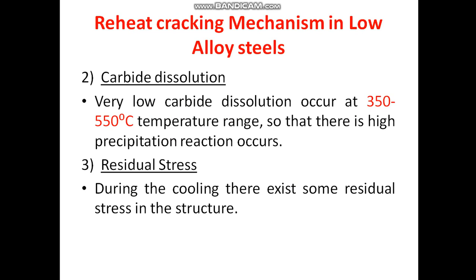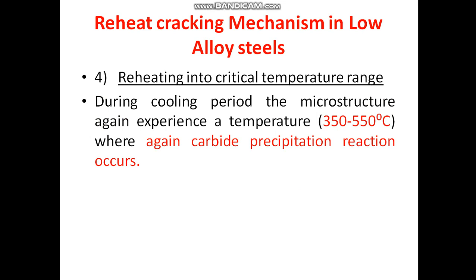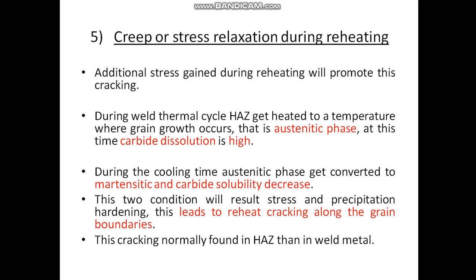Because the solubility limit of this phase is very low, excess carbide precipitates out during this temperature range. The third factor is residual stress — during cooling, residual stresses exist in the structure, which also contributes to the reheat cracking mechanism. Fourth is reheating into the critical temperature range: during cooling, when the temperature passes through 350 to 550°C, carbide precipitation reaction occurs again. Fifth is creep or stress relaxation during reheating, because the additional stress developed during reheating promotes this kind of cracking.